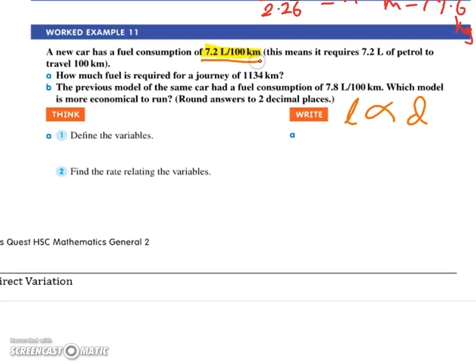They have given you, you're right, what they've said is your liters over your distance equals 7.2. Sorry, they've given you your liters over your distance equals 7.2 over 100. It's not 7.2 liters over distance, it's 7.2 over 100.